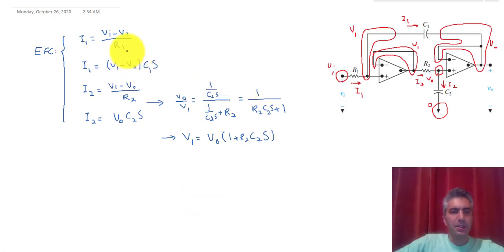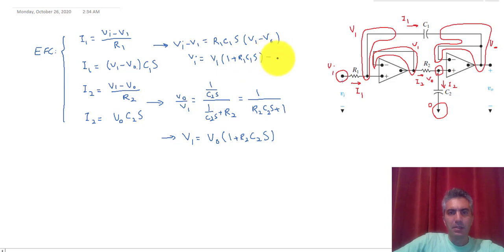Now I can equate these two to each other, these two equations. So VI minus V1 is equal to R1C1s times V1 minus Vout. So VI is equal to V1 times 1 plus R1C1s minus R1C1s times Vout.